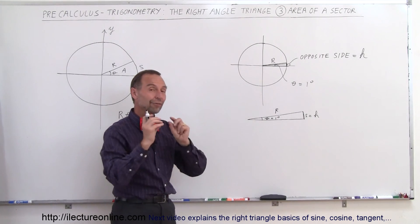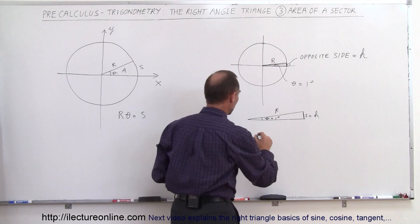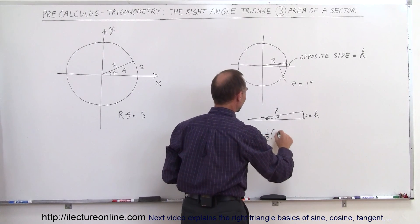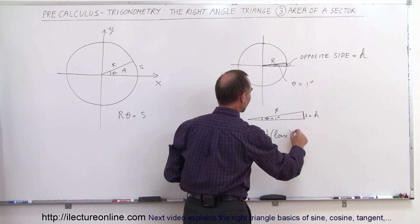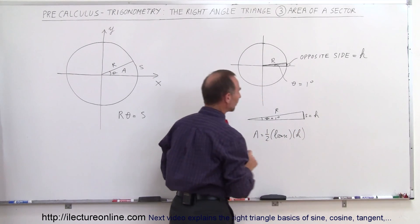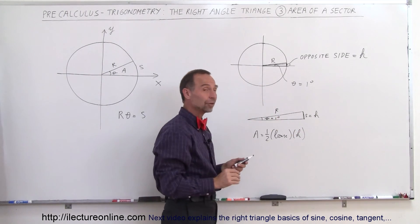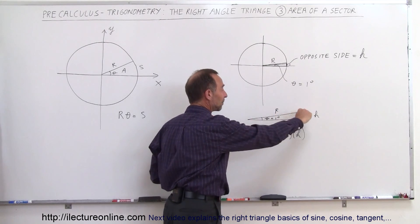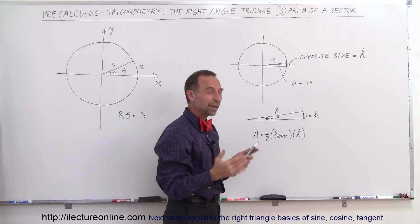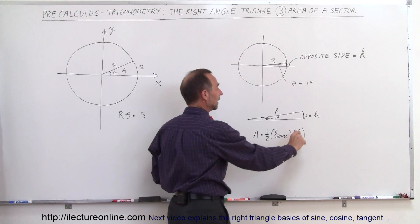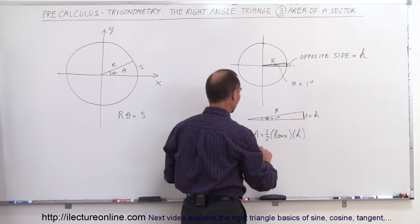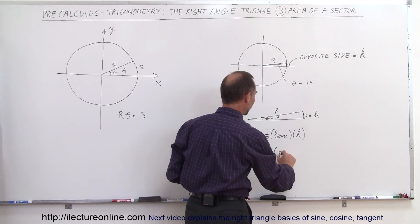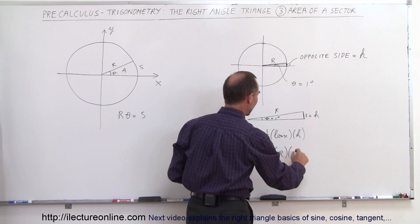So what would the area of this very skinny triangle be? Well, the area is equal to one-half the base times the height. For very small angles, the base is the same distance as the hypotenuse, so I can call the base equal to r and the height equal to s, so the area of that small strip is one-half times r times s.